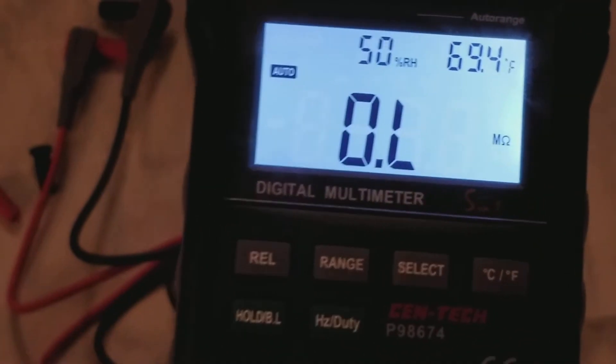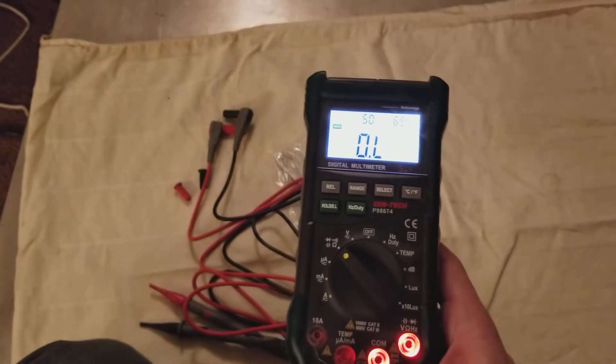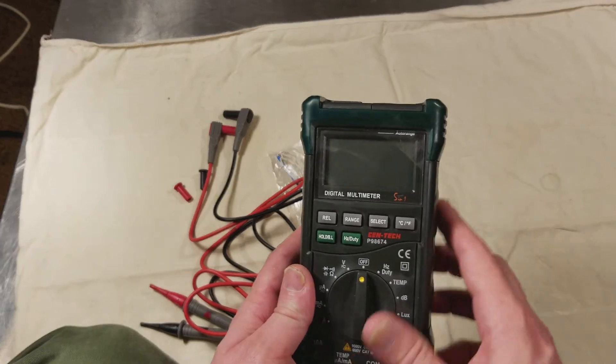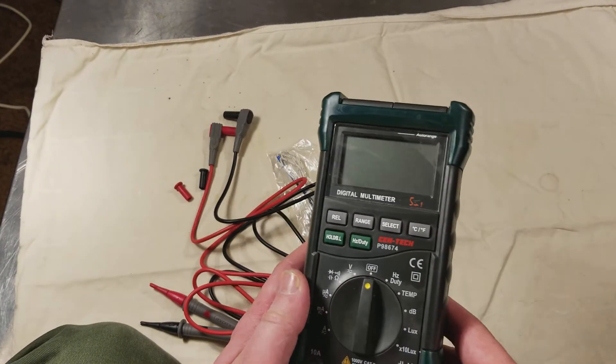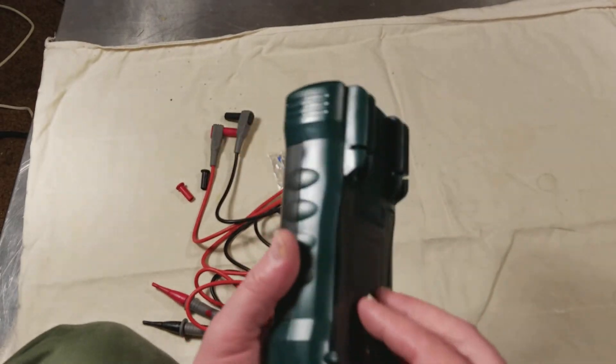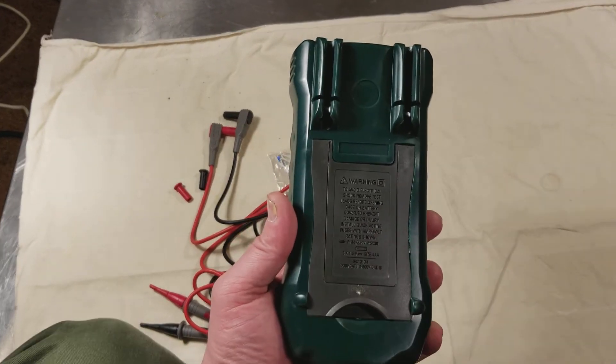So anyway, it's a pretty nice little meter. Turn the lights back on here. It has an integrated soft cover boot. You can take it off. You do need to if you want to disassemble the unit. It uses three AAA batteries.